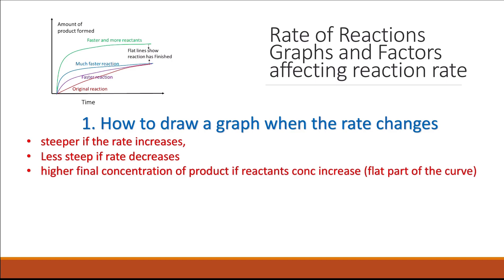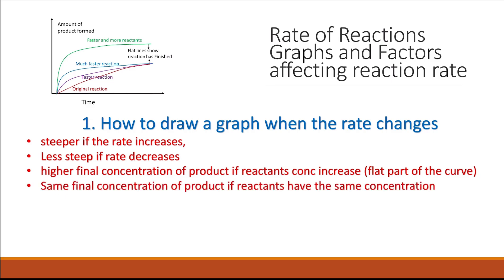The flat part of the graph represents the highest concentration of product. This will be at a higher final concentration if reactant concentration increases — that's the flat part of the curve. However, if you use the same concentration of reactant but change a factor that increases the rate, like using a catalyst or increasing temperature, then you will have the same final concentration of product.